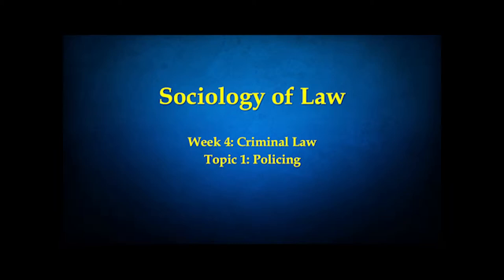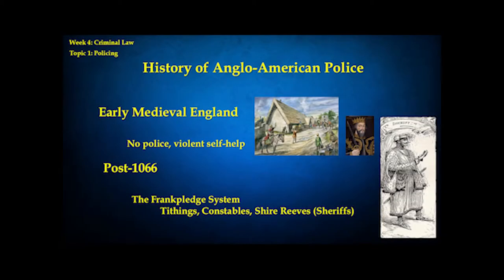Our first topic under criminal law is policing. Like many aspects of the American legal system, the history of American policing goes back to roots in England. If we trace the history of the police in England back, we find that in the Middle Ages — the early medieval period — there were no police. Without any full-time officials charged with enforcing the law, people had to handle the law themselves, relying on self-help, taking the law into their own hands to defend themselves from theft and assault. Members of communities and family members banded together to catch thieves, deter violence, and punish wrongdoers.